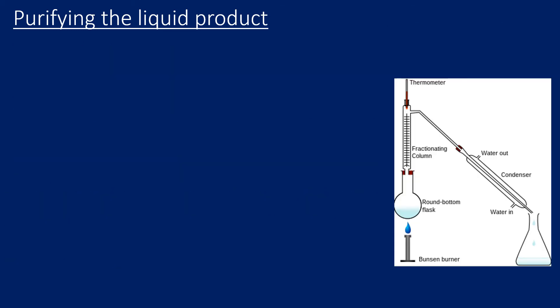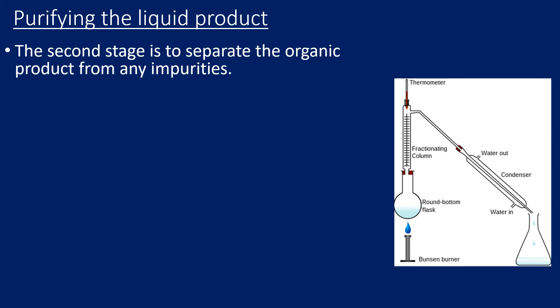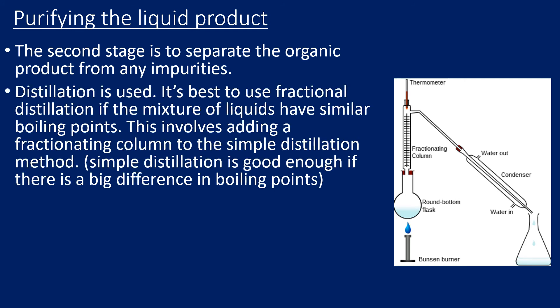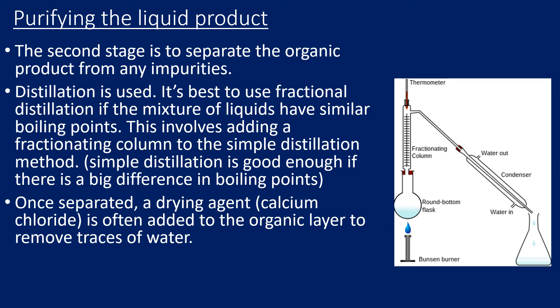The second stage of purification is to remove any remaining impurities from the product using distillation. Fractional distillation is preferred, particularly when the mixture of liquids have similar boiling points, although simple distillation can also be used. Once separated, we can apply a drying agent again to remove any traces of water. We now have our pure product collected.